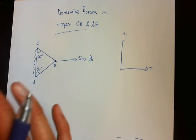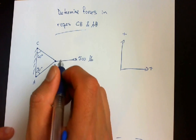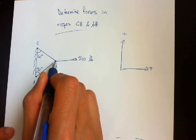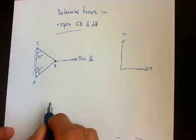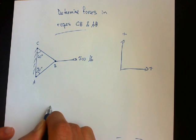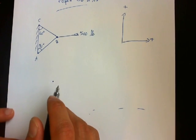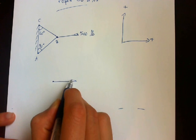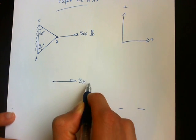The next step is to draw our free body diagram. This point is where all the forces are acting. Here we draw a dot and there's a force like this, 500 pounds.